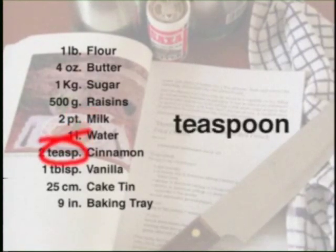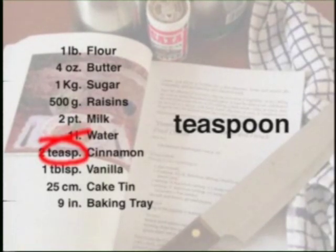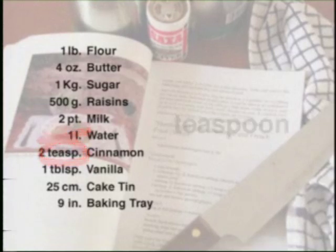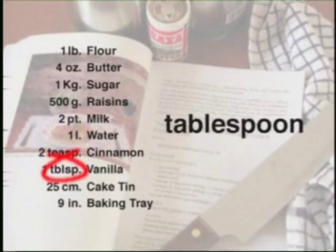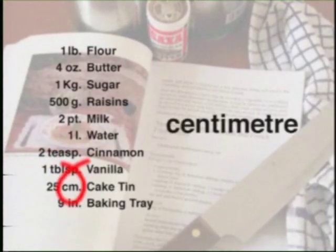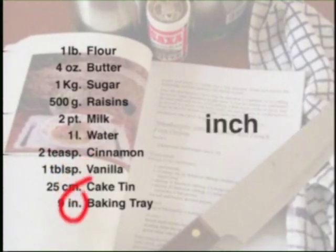Other common abbreviations you find in recipes are TEASP for teaspoon, TBLSP for tablespoon, CM for centimetre, and IN for inch.